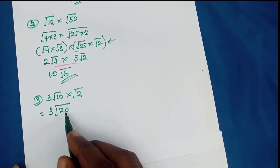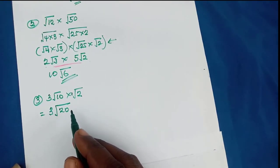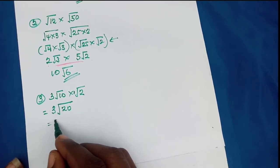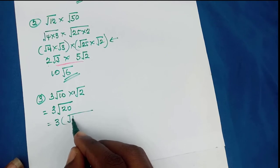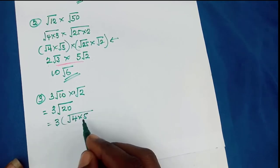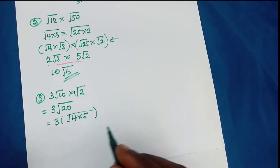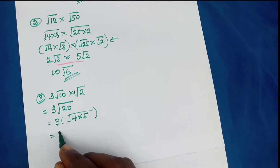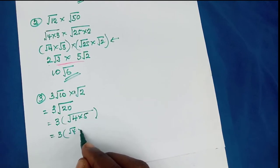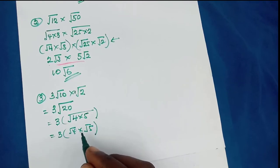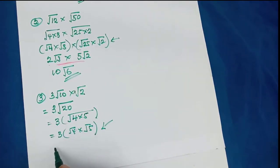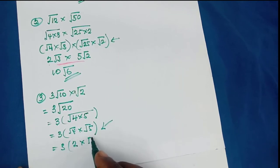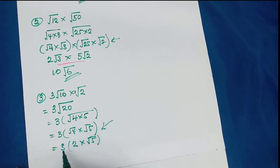The answer is 3 root 20, but 20 is not in simplified form. Root 20 can be written as root 4 times root 5, since 4 times 5 is 20. Root 4 is 2, so we have 3 times 2 times root 5, which gives us 6 root 5. Root 5 is in simplest form, so that's the final answer.